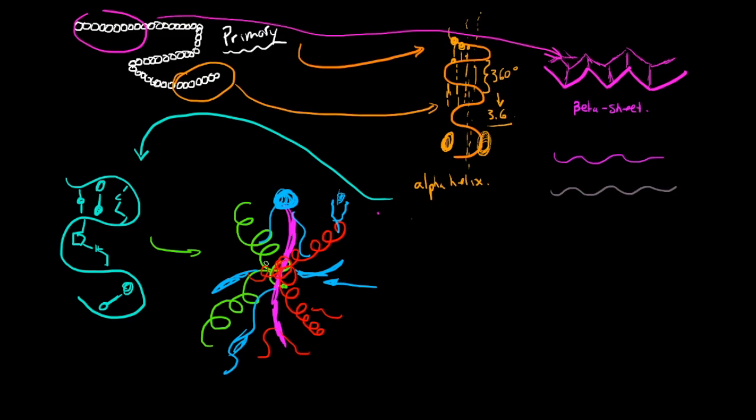And next we have the quaternary structure, which is just multiple tertiary structures, so multiple different proteins coming together to form one big protein. An example of that, a common example would be the structure of hemoglobin or the structure of pyruvate dehydrogenase.